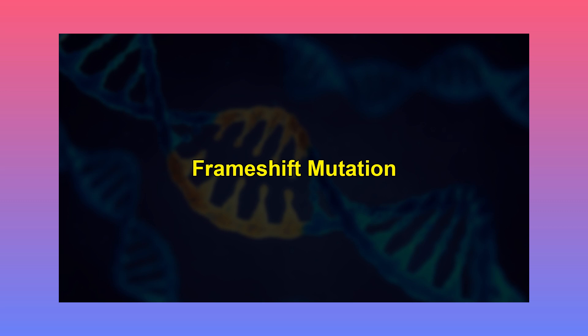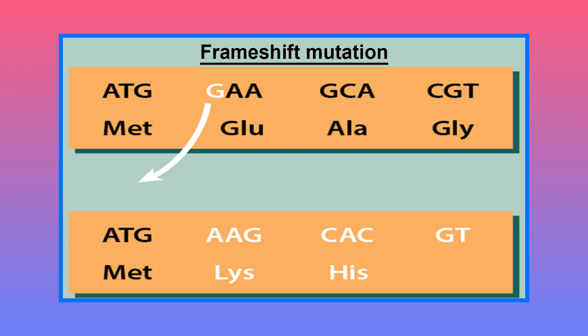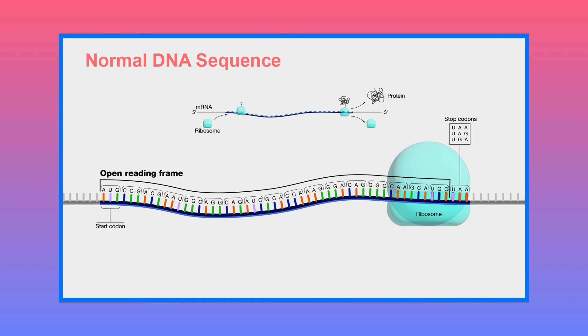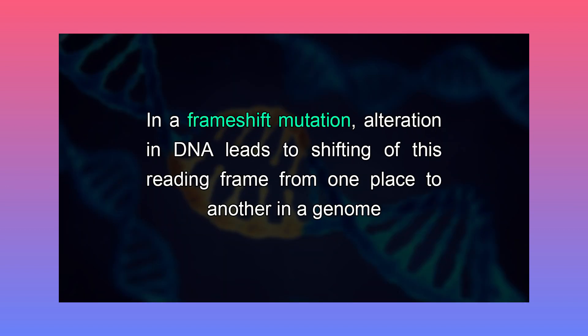The addition or deletion of a base such that the coding sequence is shifted out of register is called a frameshift mutation — we change the reading frame of the gene. Base pair alteration causes an abnormal reading frame, which ultimately results in abnormal protein formation. A specific reading frame has a start codon and a stop codon, with a definite coding sequence in between. In a frameshift mutation, alteration in DNA leads to shifting of reading frames from one place to another in a genome, so the position of start or stop codon changes. Like nonsense mutations, frameshift mutations usually lead to complete inactivation of that particular gene.